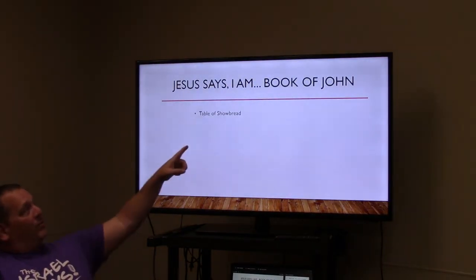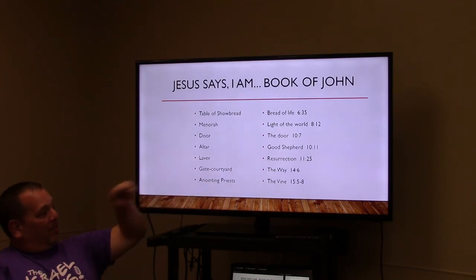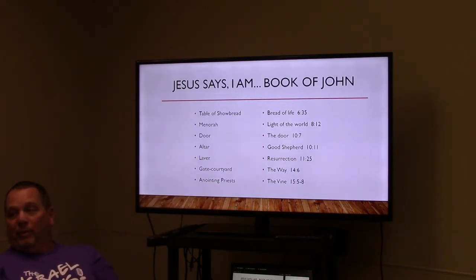The seven tabernacle elements and their matching 'I am' statements from John: the table of showbread — 'I am the bread of life' (John 6:35); the menorah — 'I am the light of the world' (John 8:12); the door — 'I am the door' (John 10:7); the altar — 'I am the good shepherd' (John 10:11); the wash basin or laver — 'I am the resurrection' (John 11:25); the courtyard — 'I am the way' (John 14:6); and the anointing of priests — 'I am the vine' (John 15:5-8).